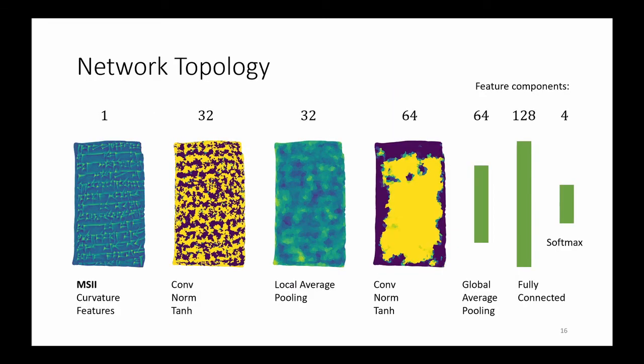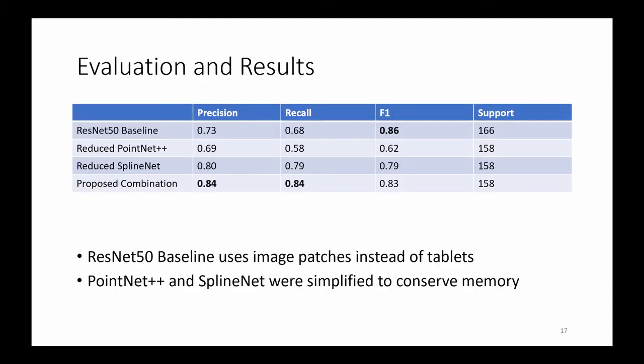Our complete network topology is as follows. We begin with one MSII feature and convolve the mesh to 32 features per vertex. Then, by pooling and further convolution, the count of features is expanded to 64 per vertex. Finally, we compute the global average for the whole mesh and, through a fully connected layer, predict one of the four periods of origin. The presented network is simpler and shallower than our baseline ResNet-50, yet we outperform it.